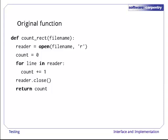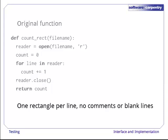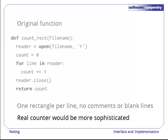Here's how to fix this. Imagine that instead of reading rectangles, we're just counting them. This simple function assumes the file contains one rectangle per line with no blank lines or comments. Of course, a real rectangle counting function would probably be more sophisticated, but this is enough to illustrate our point.